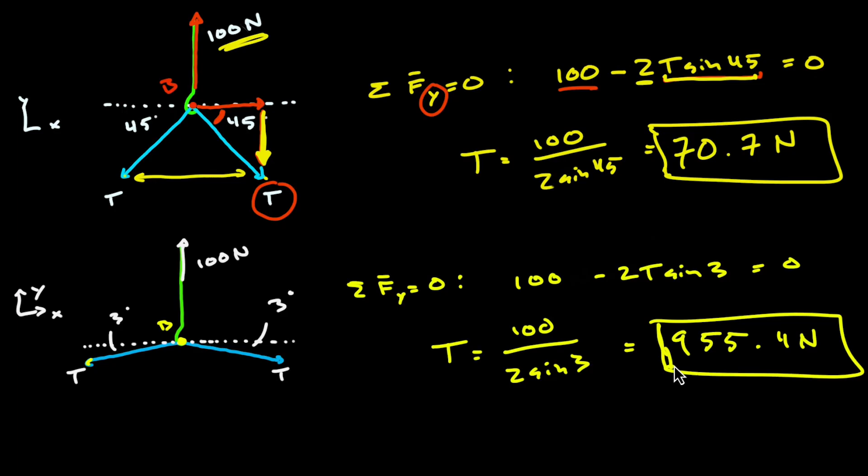Now again we want to sort of reflect on this and think about what's actually happening. So in all these examples it was only the vertical component of the tension force that actually counteracted the 100 newton force. And so as this angle gets shallower and shallower the vertical component gets smaller and smaller with respect to the overall tension force. And because it's those two vertical components that still have to counterbalance that 100 newton force then the absolute magnitude in the tension has to keep increasing so that those two little vertical components can still balance that 100 newton force.